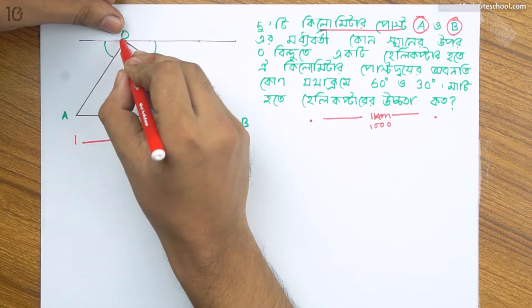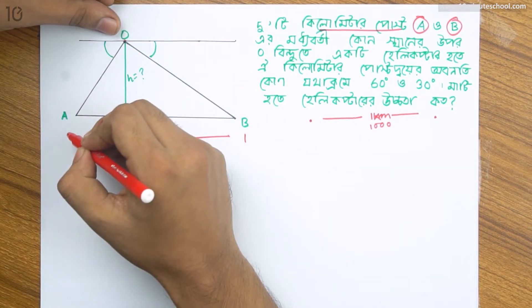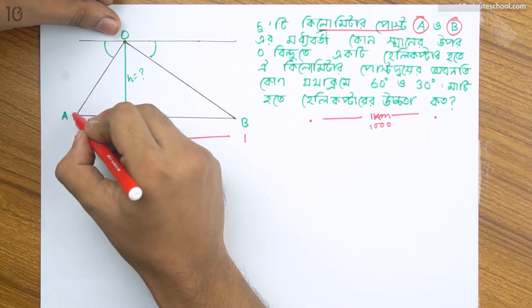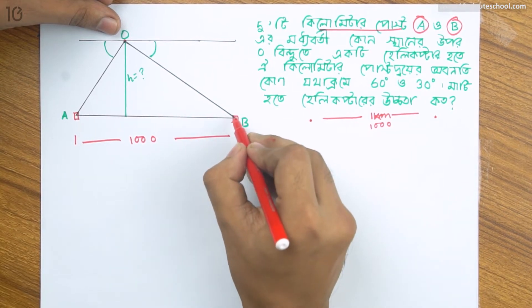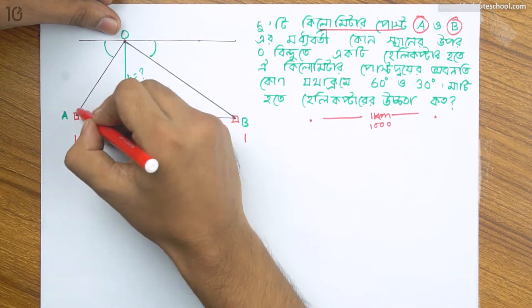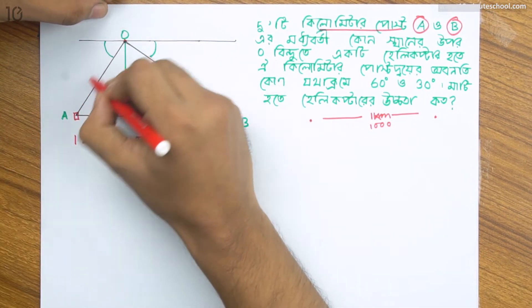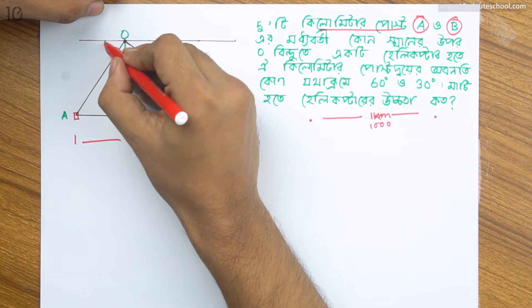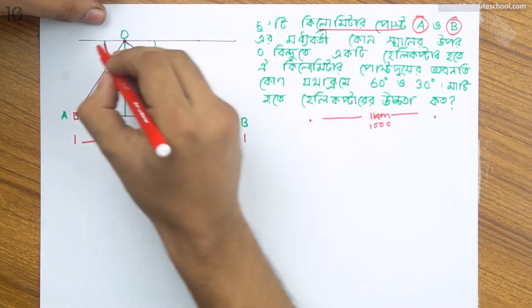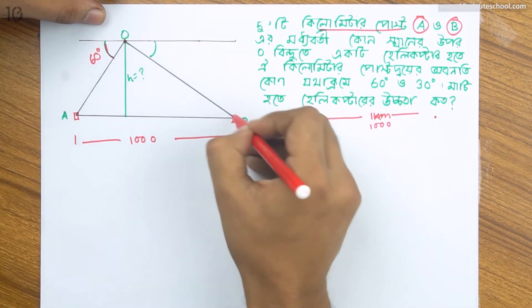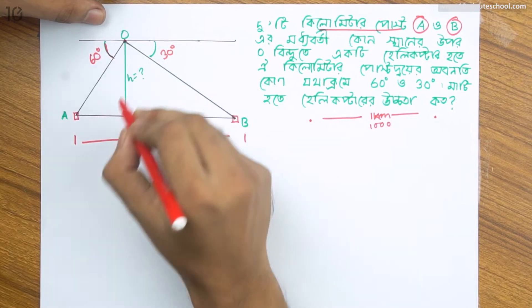This helicopter is at a kilometer post - that is, a kilometer post. The post is in a fixed position. Which is in the same place? This angle is 60 degrees, and this angle is 30 degrees.